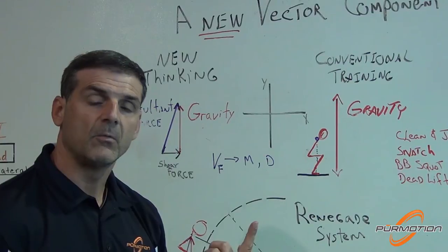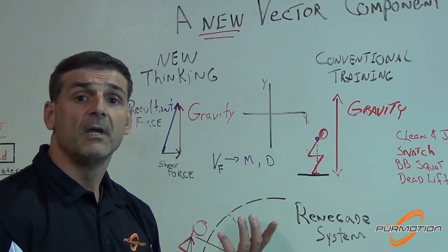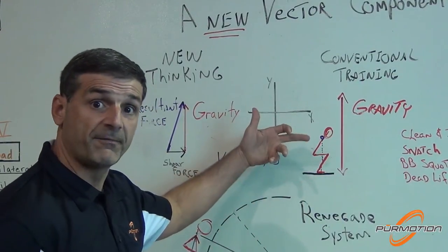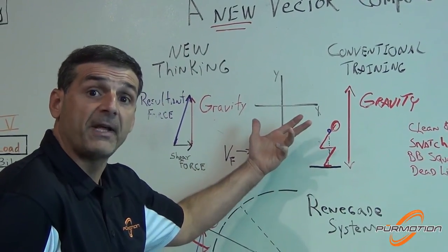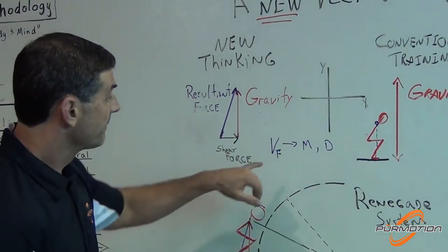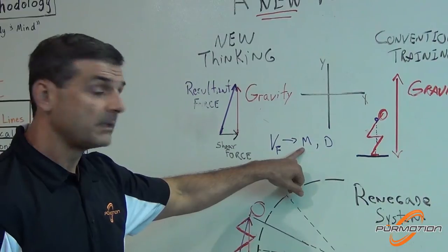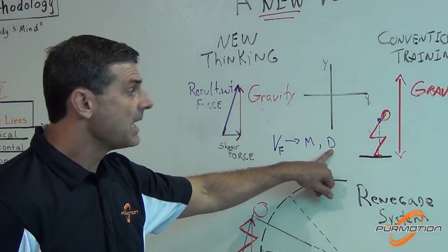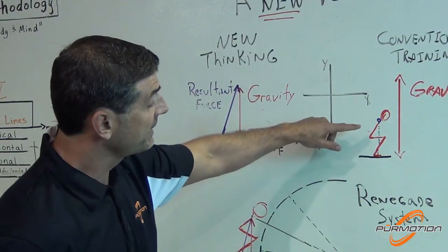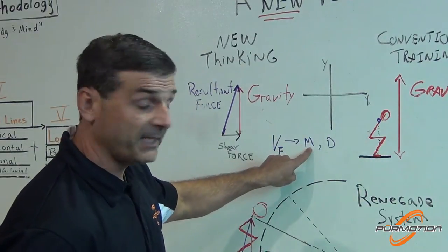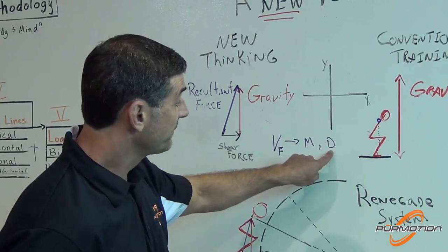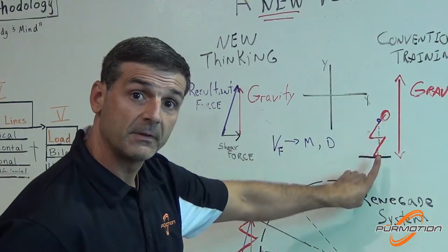What is a vector? Well, a vector, let's put it this way. Force that we generate from the ground up or ground-based force development, force by itself is a vector. And a vector is defined by two components: magnitude and direction. The vector is represented by first the magnitude, which is the weight that the user manages, and the direction is the vertical component.